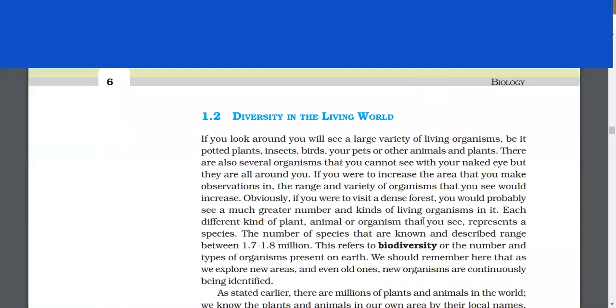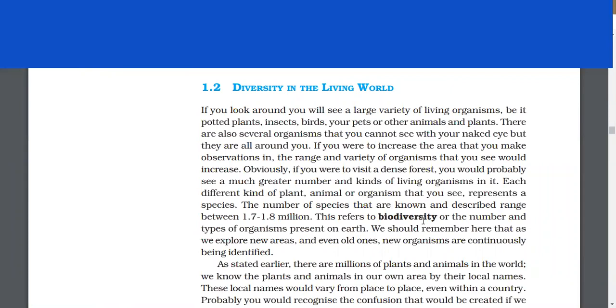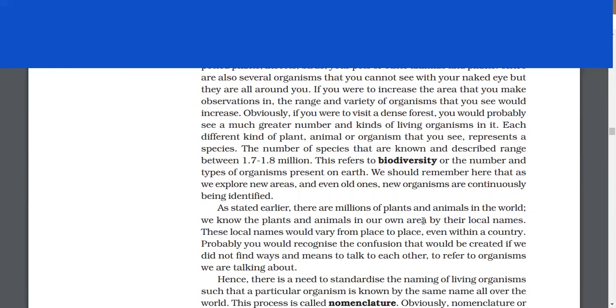Diversity in the Living World. If you look around, you will see a large variety of living organisms: potted plants, insects, birds, your pets, or other animals and plants. There are also several organisms that you cannot see with your naked eye. If you were to visit a dense forest, you will probably see a much larger number and kinds of living organisms. Each different kind of organism that you see represents a species.